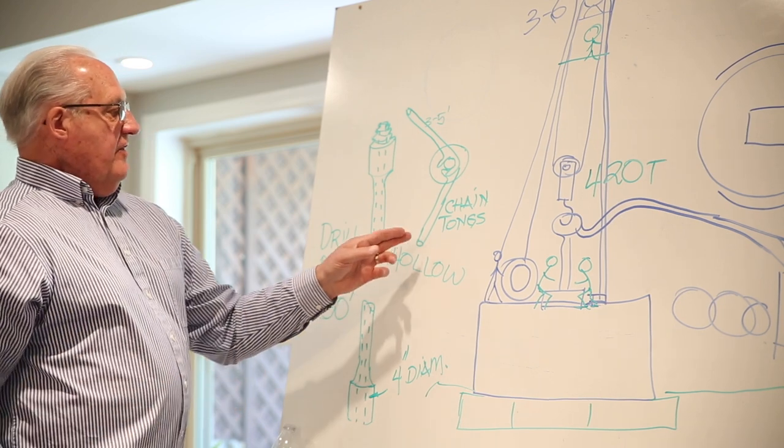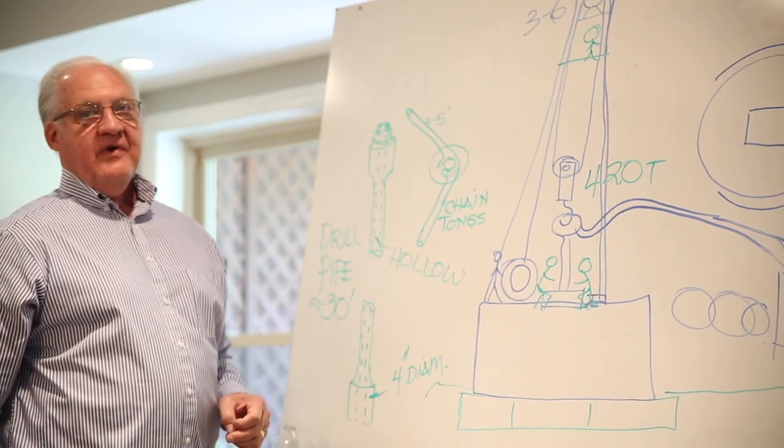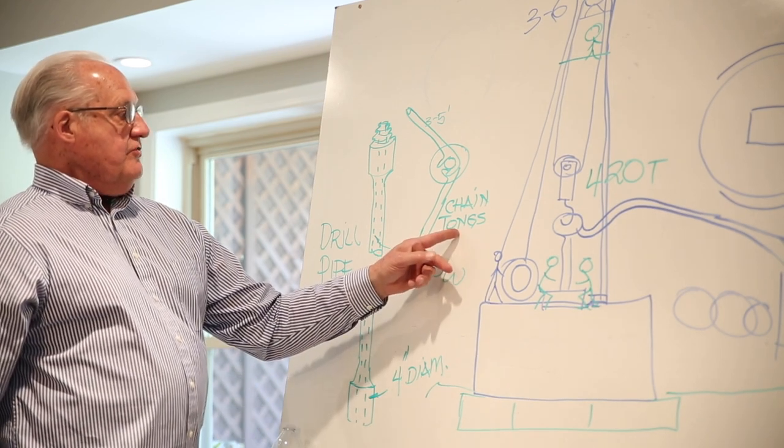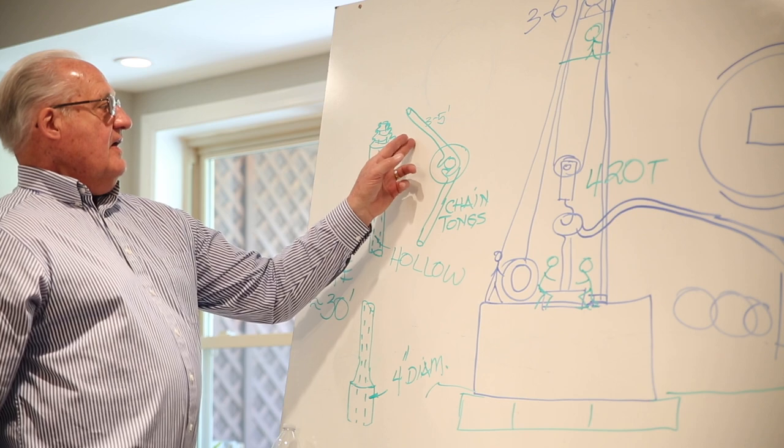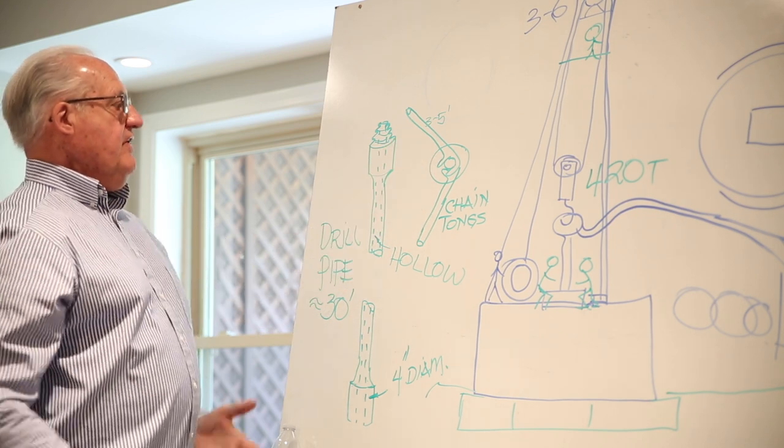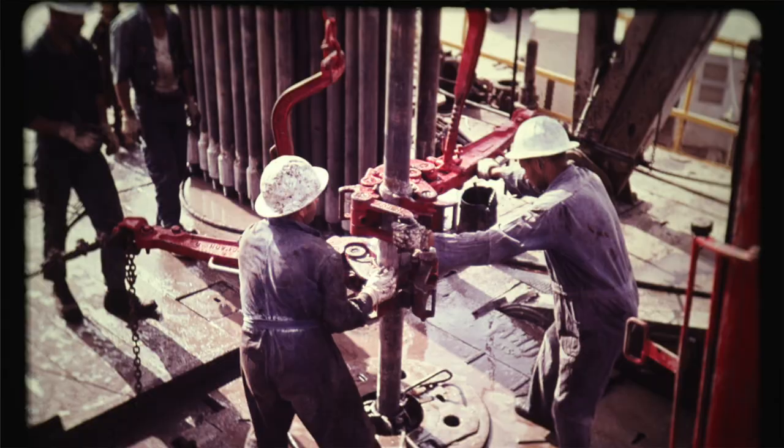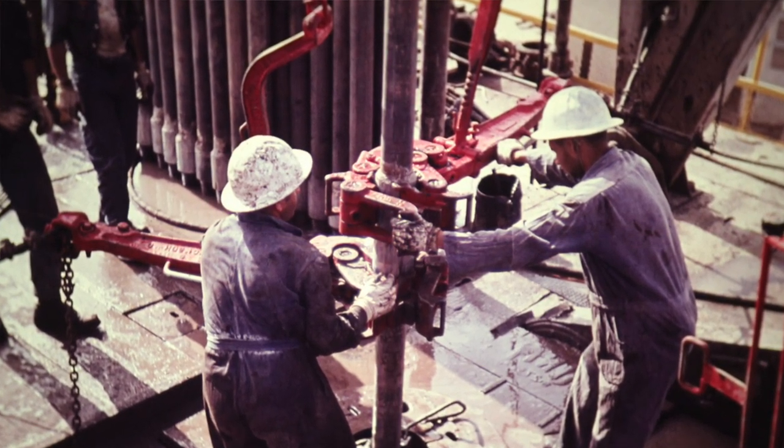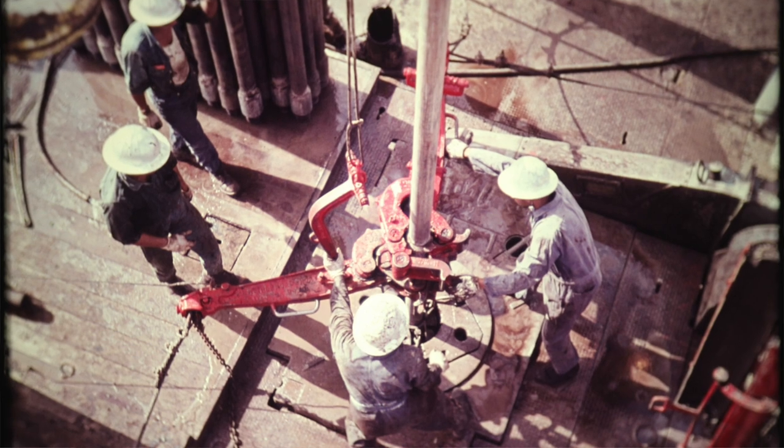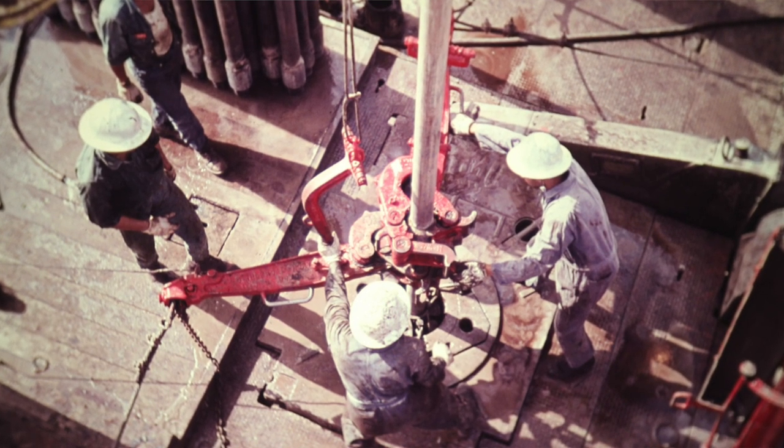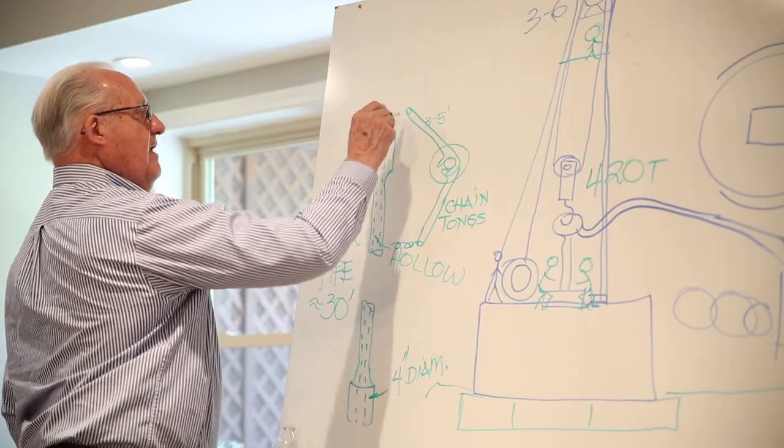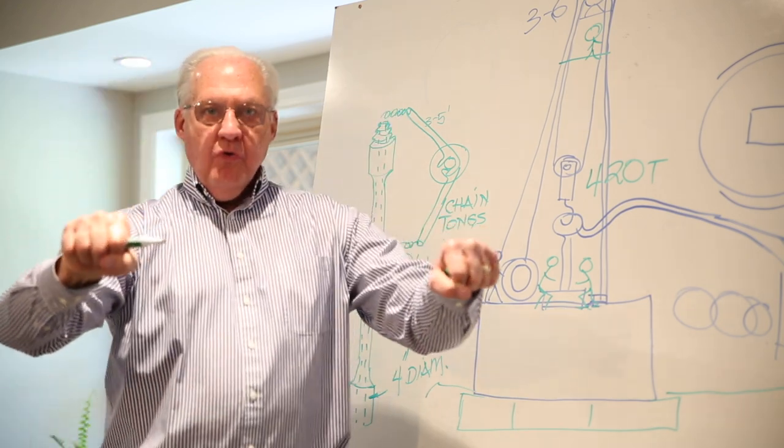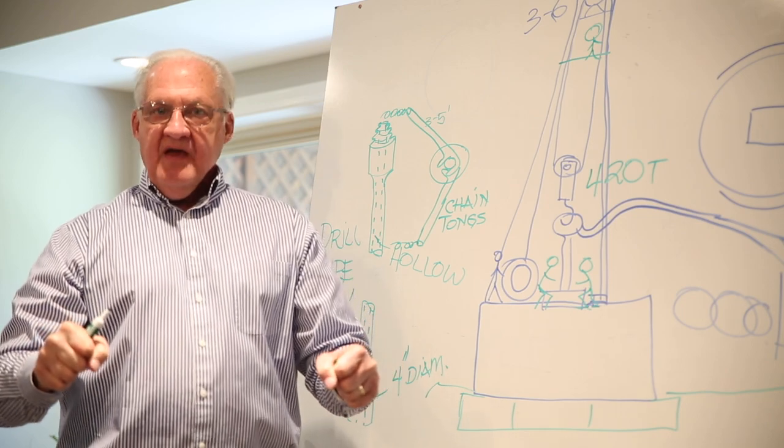They didn't use crescent wrenches or pliers, they used what they call chain tongs. These are heavy. The arm of each one could be three to five feet, maybe even more in length, and they have teeth on them. They grasp the pipe and then they have chains attached to the ends.